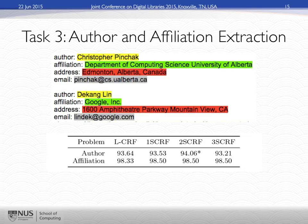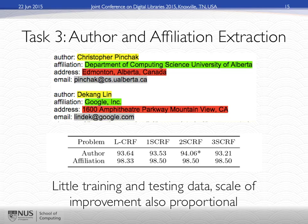Finally, author and affiliation extraction turns out to be a pretty hard problem — there are three sub-tasks: extracting the author and affiliation from the title page of an article. Because of the wide variety of differences in how people represent authors and affiliations, this is more difficult than reference string parsing. We don't see much improvement here, because the scale of our testing and training data that's publicly available is pretty small.